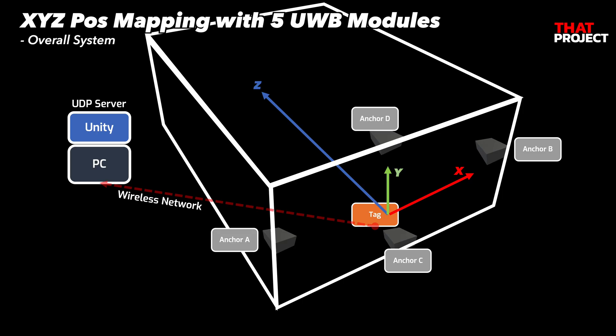This is the environment I created for actual testing. Two anchors are placed horizontally and two anchors are placed vertically. All anchors are fixed — only the tag moves. All data obtained from the tag is transferred to Unity through UDP, and Unity calculates the data in real time and displays the X, Y, and Z positions of the tag in the virtual environment.